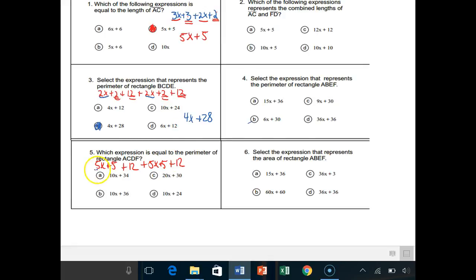Just look for the like terms. We've got two 5Xs, I've got 5 and 12, 5 and 12. 5x and 5x, that's 10x. 5 plus 12 is 17, and I've got another 5 plus 12 which is another 17. So 17 plus 17 is 34. So A.